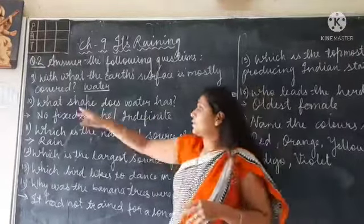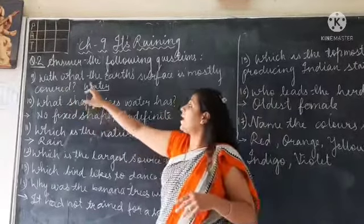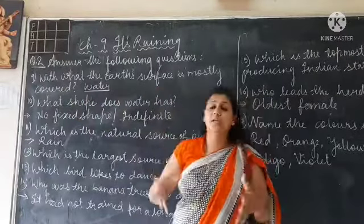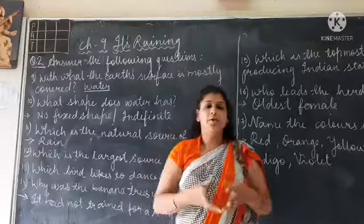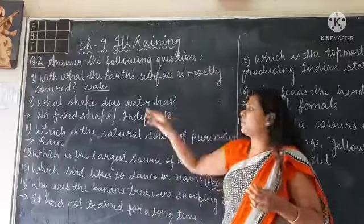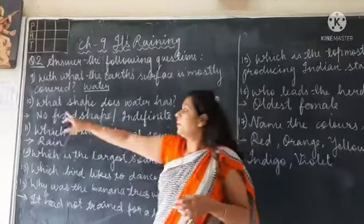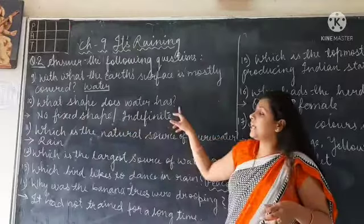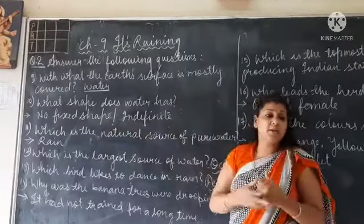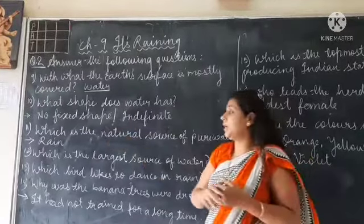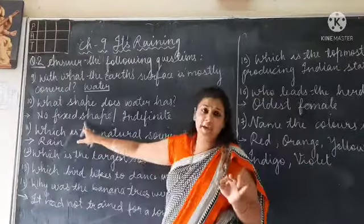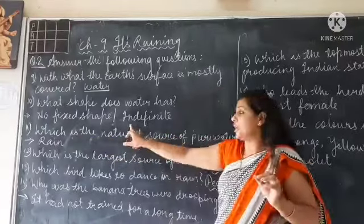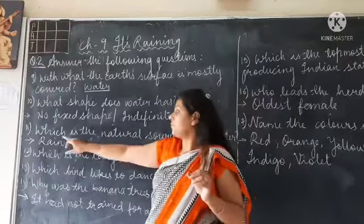Question 9: With what is the earth's surface most covered? It is mostly covered with water. Number 10: What shape does water have? Water ka kya shape hota hai? It has no fixed shape, or we can call it an indefinite shape.